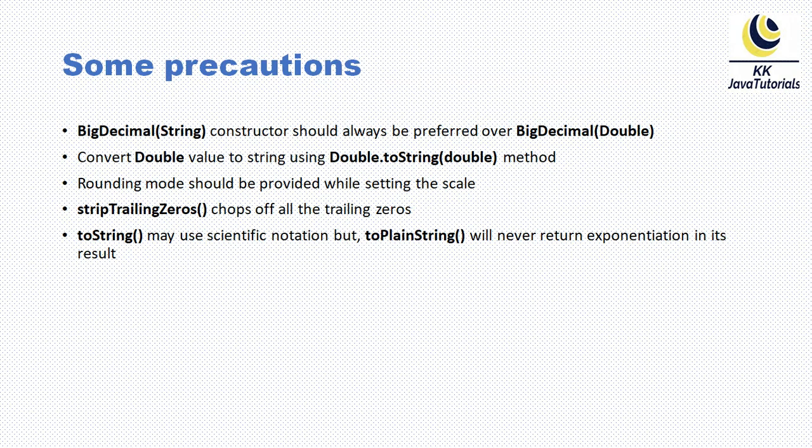Rounding mode should be provided while setting the scale. When you use BigDecimal, you should provide rounding as a scale — after a decimal, you may have 10 digits, but you control how many digits appear in the calculation. There is a method called stripTrailingZeros() which will remove all trailing zeros when using BigDecimal. Also, toString() may use scientific notation, but toPlainString() will never return exponential notation in its result. So when using BigDecimal, instead of toString(), call toPlainString(), which returns the number in decimal format.